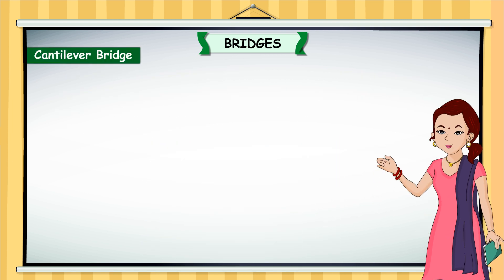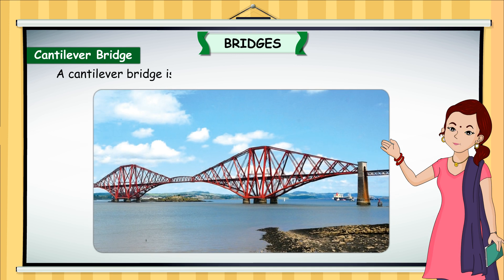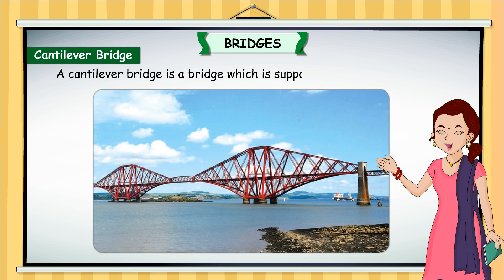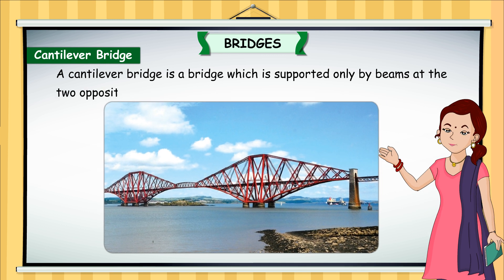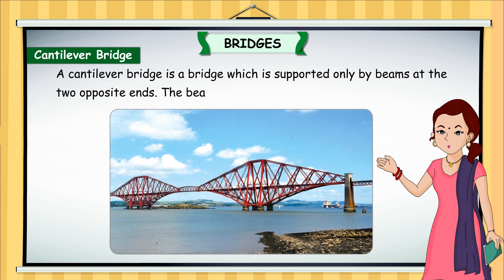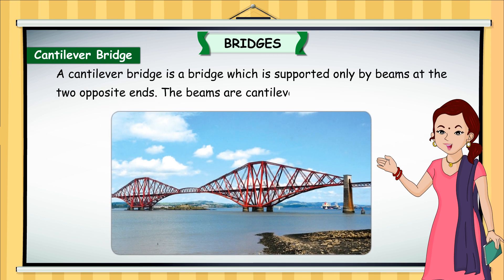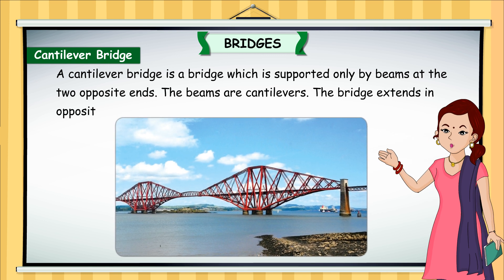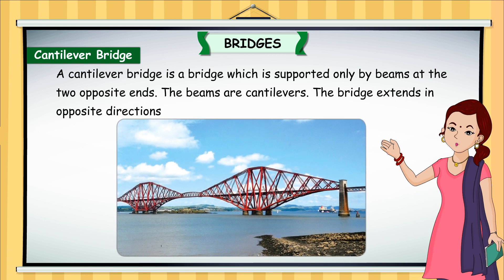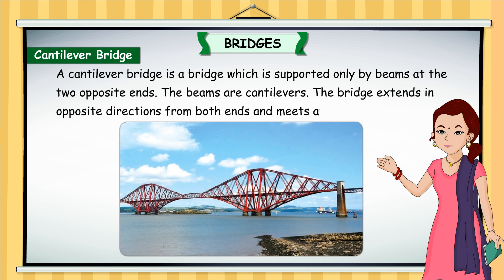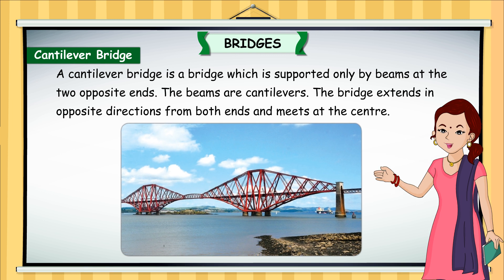A cantilever bridge is a bridge which is supported only by beams at the two opposite ends. The beams are cantilevers. The bridge extends in opposite directions from both ends and meets at the center.